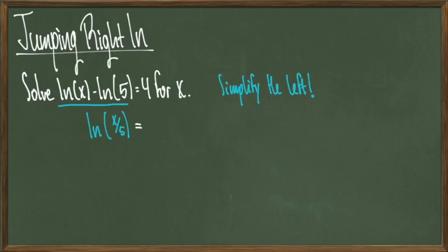So the first thing we'll do is simplify the left hand side using the quotient rule to get ln(x/5) = 4.